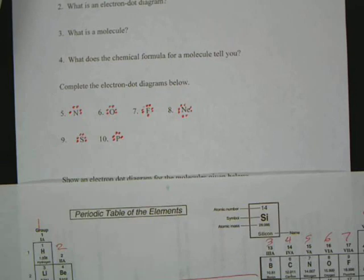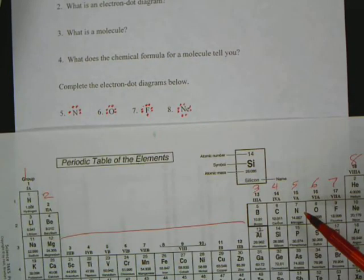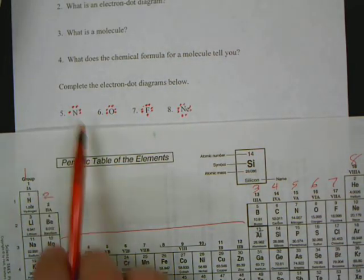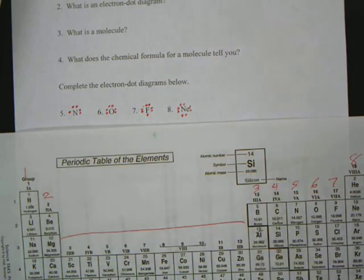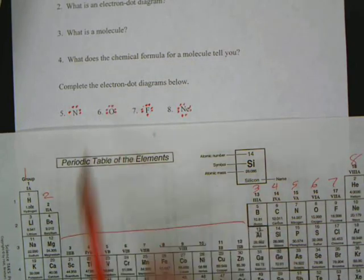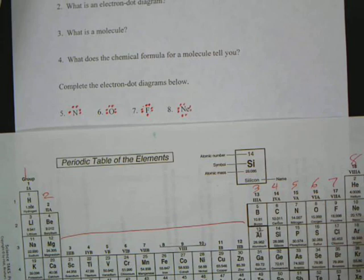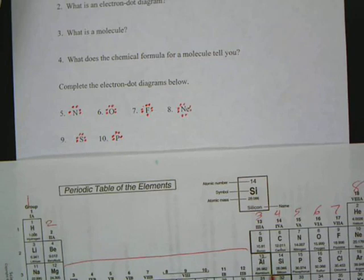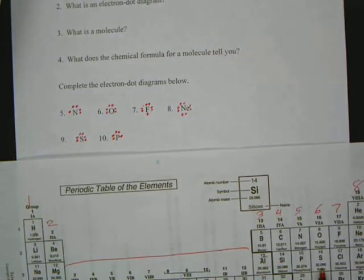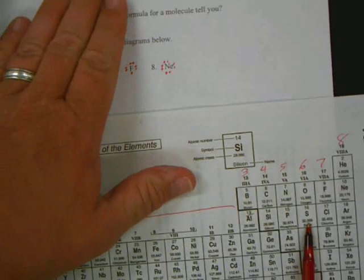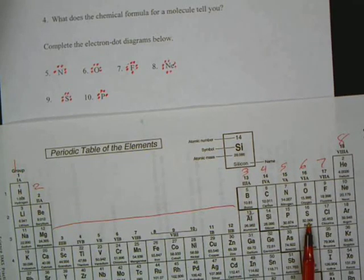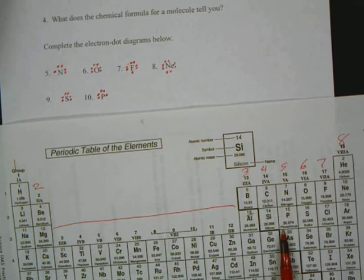So, go to those right there. N is in the fifth column, so it's going to have five dots. O is in the sixth column, six dots. F, seventh column, neon, sulfur, and phosphorus. Does everybody have those?